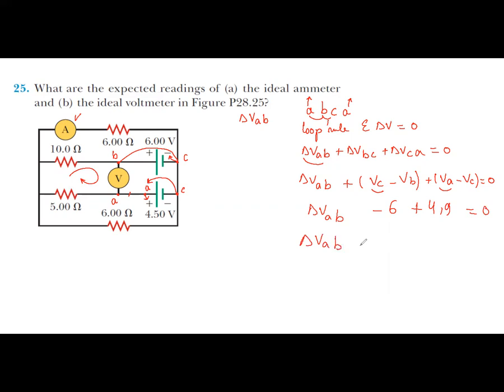So delta VAB equals to 6 minus 4.9, equals to 1.1 volts. So delta VAB, we calculated.